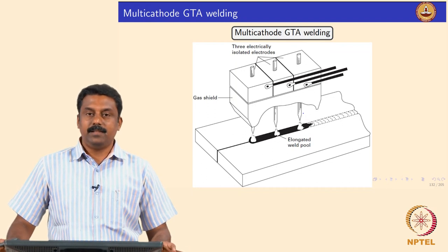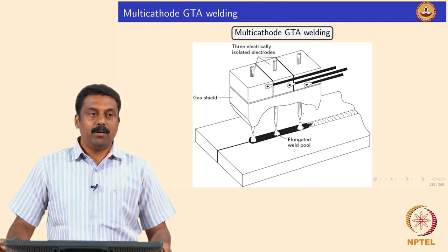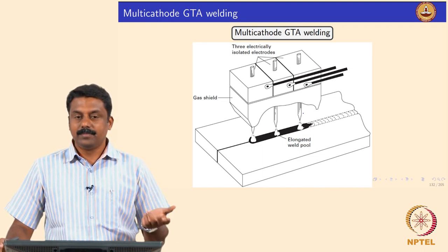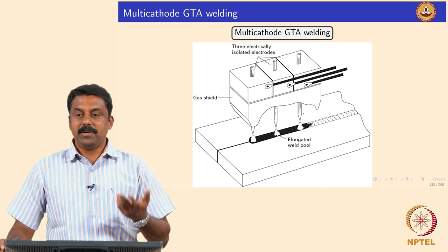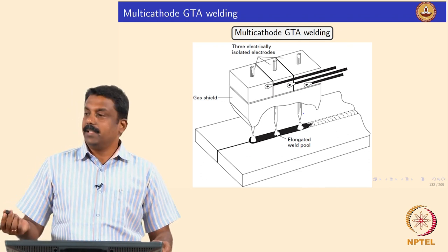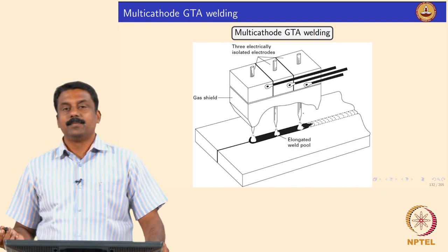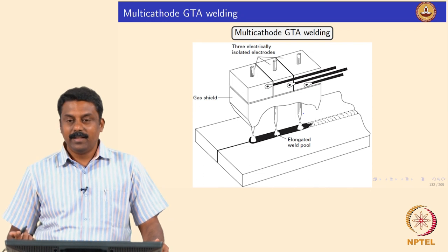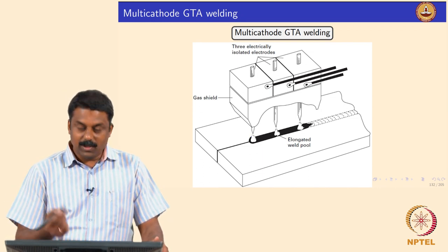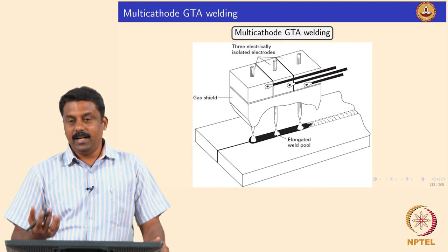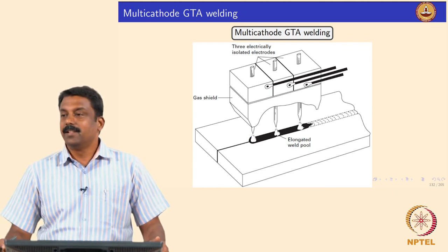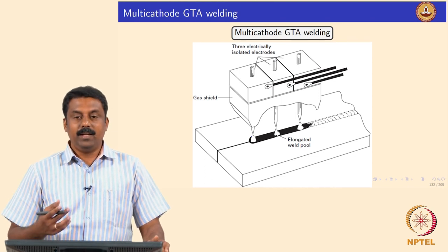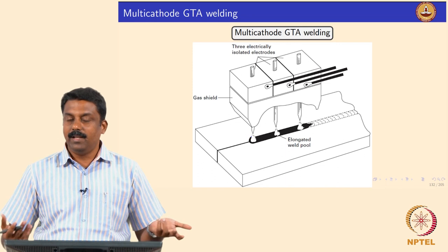Sometimes if you have a very high energy density process you always have an undercut — that means the penetration may not be achieved if you do not have a keyhole. In those applications we can also use a multi-cathode TIG process. In this case we melt more volume, so if you want to increase the productivity we can use instead of one tungsten electrode multiple electrodes. You can also avoid the undercut by melting more volume so the liquid can flow and fill the weld cavity.